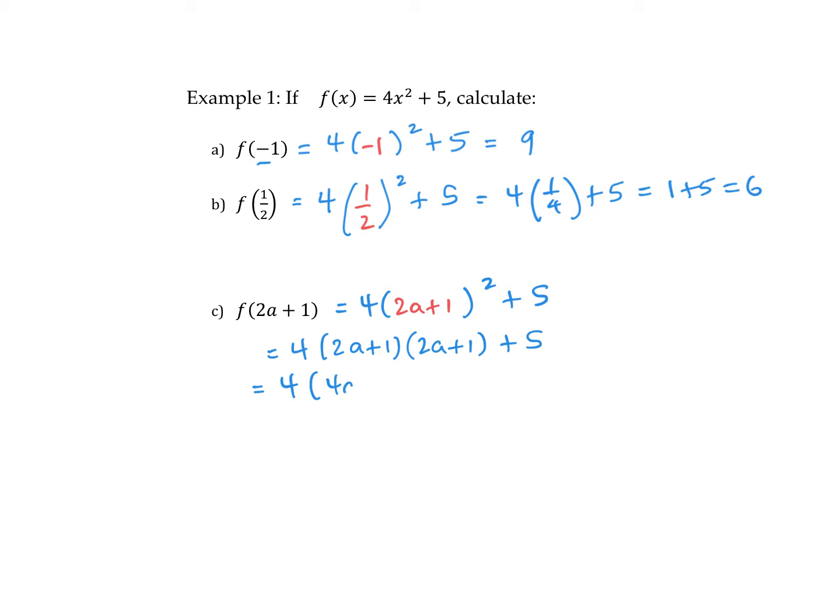So it's 2a times 2a, 4a squared, 2a times 1, 1 times 2a, and 1 times 1. Sometimes we forget those middle terms when we square. Don't forget it's 2a plus 1 times 2a plus 1. Then I would multiply the 2a plus 1 squared by 4. So I always leave that coefficient to the end. I'll expand my brackets first, now multiply it by 4, and then finally we'll just collect like terms.